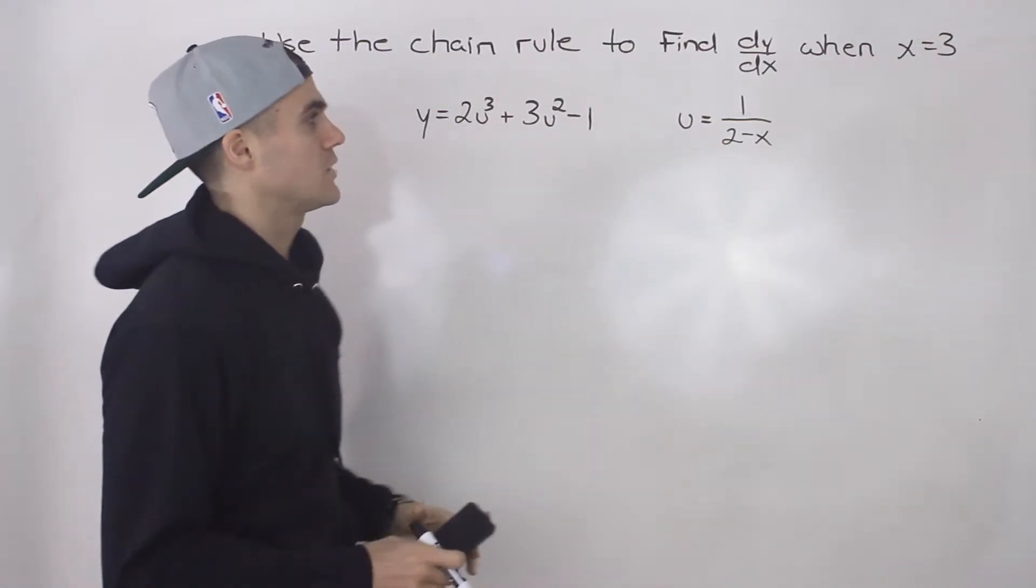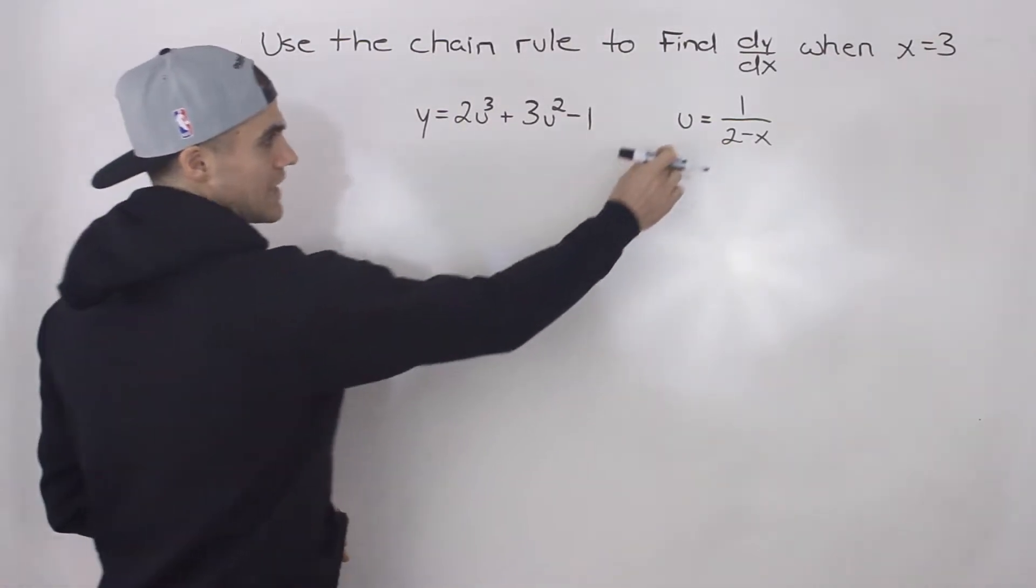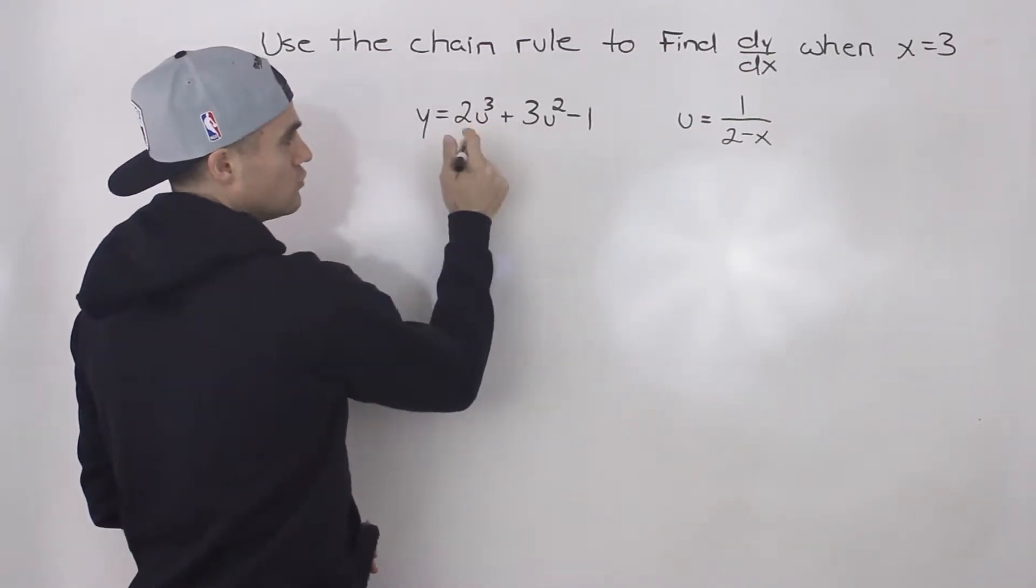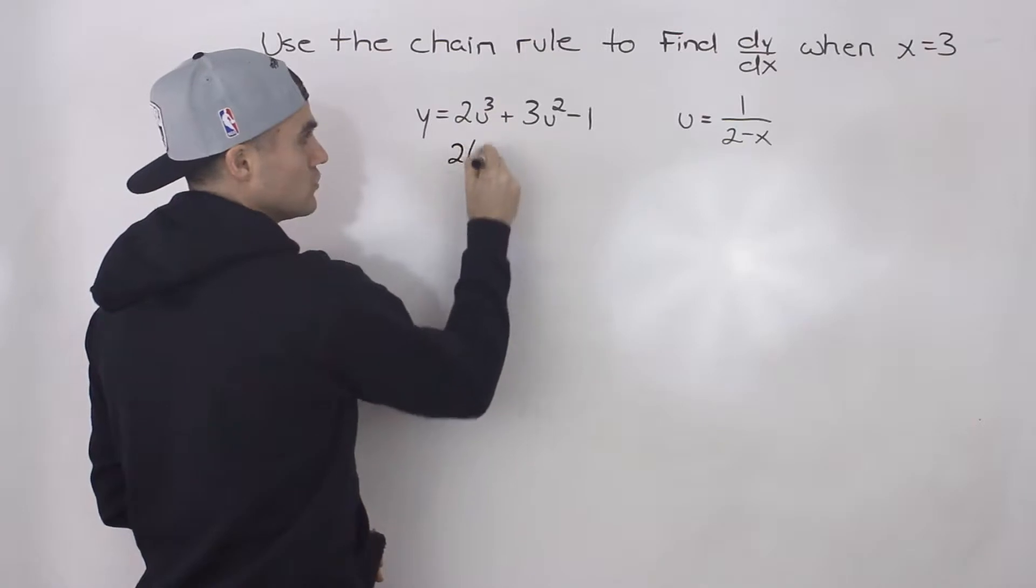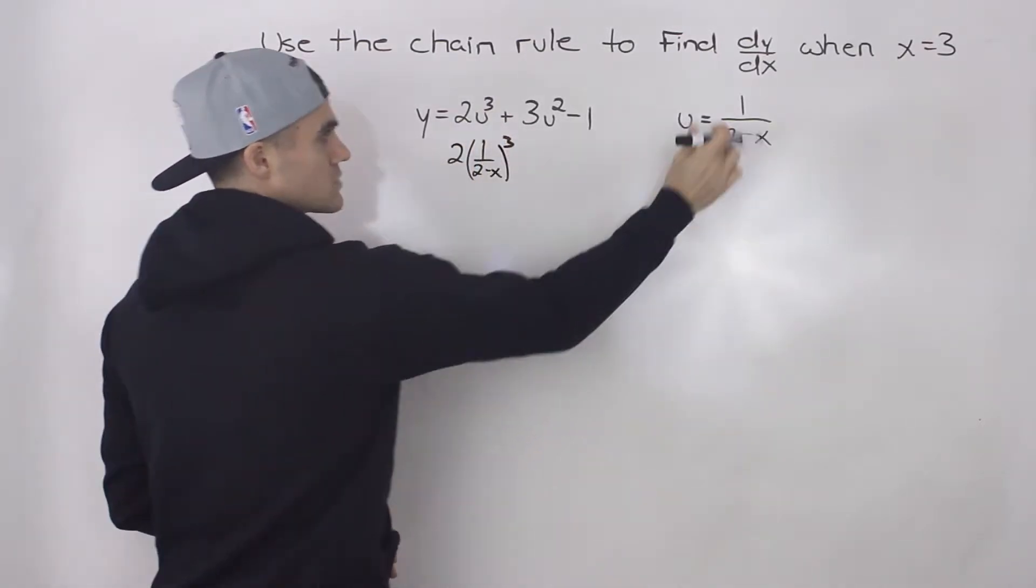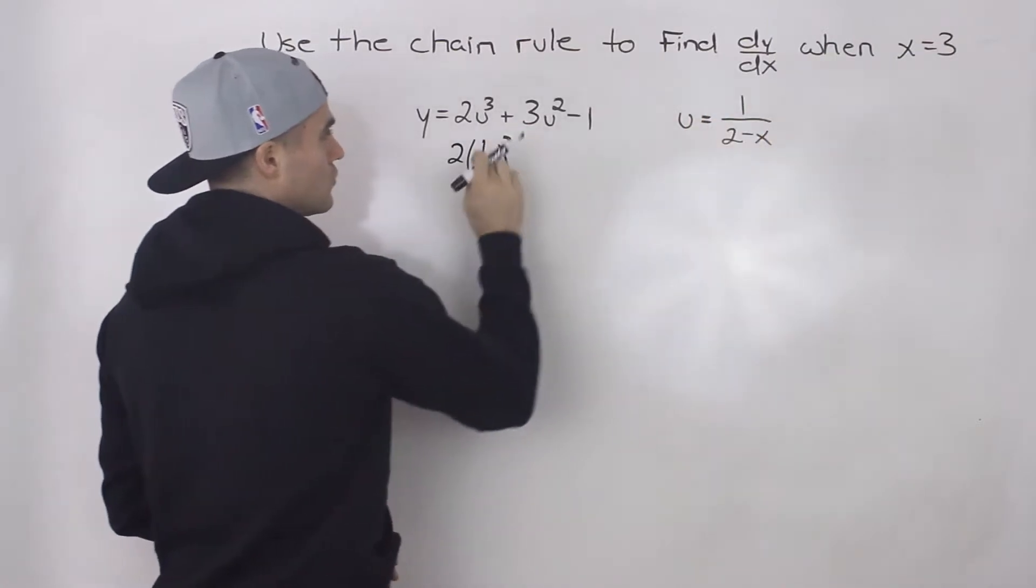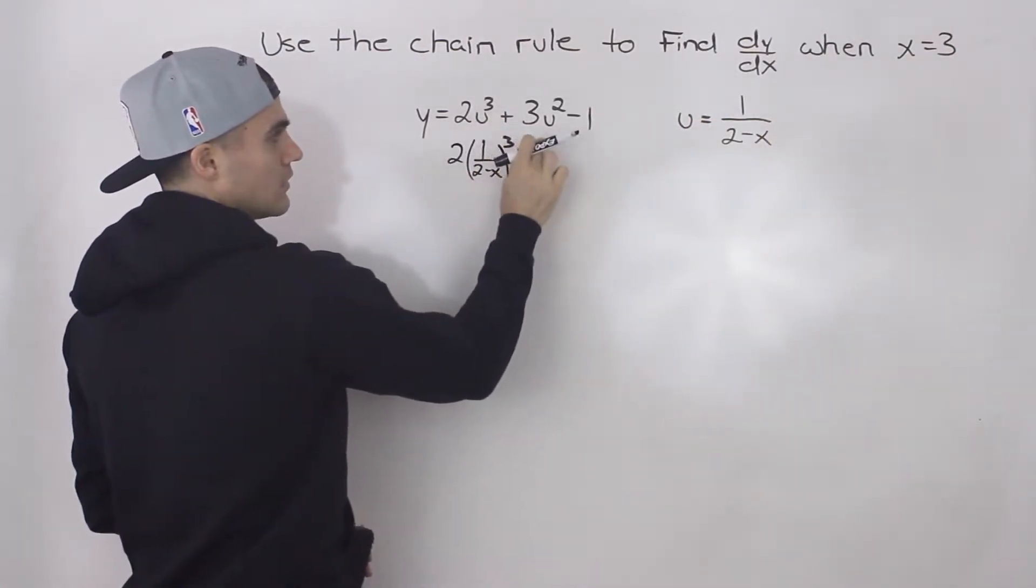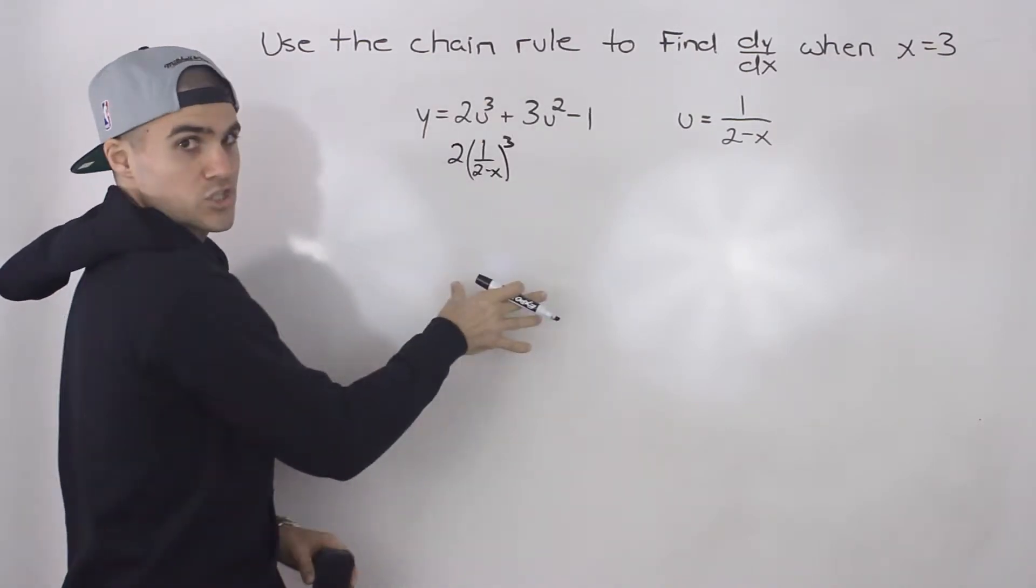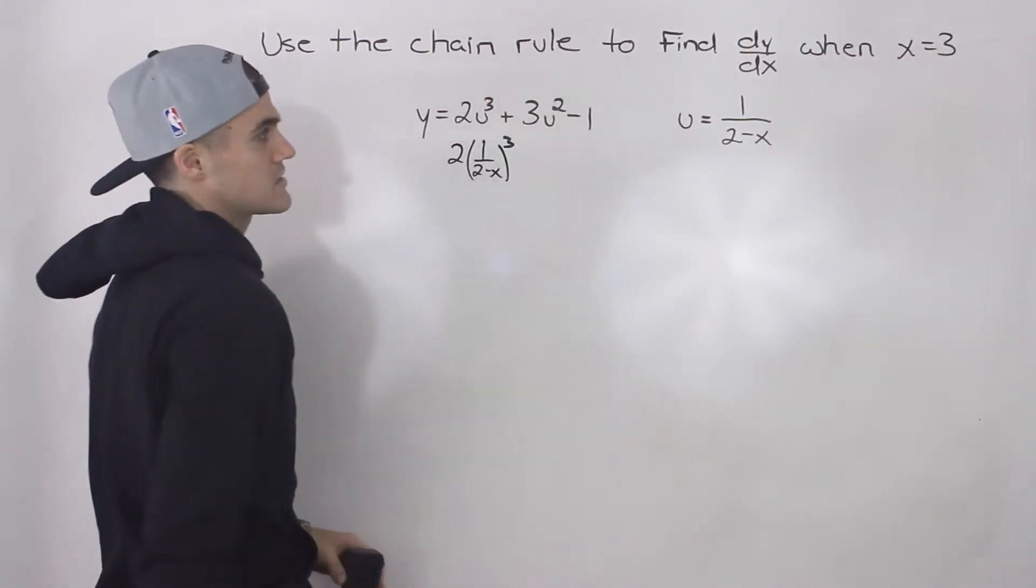So there's a couple of ways that we can do this. We can take this u function and sub it in here. So instead of writing u³, we would have like 2, 1 over 2 minus x cubed. So we just took this expression for u and plugged it in here. We would do the same there, and then we'd have the minus 1. And then we would differentiate that and plug in x equals 3.